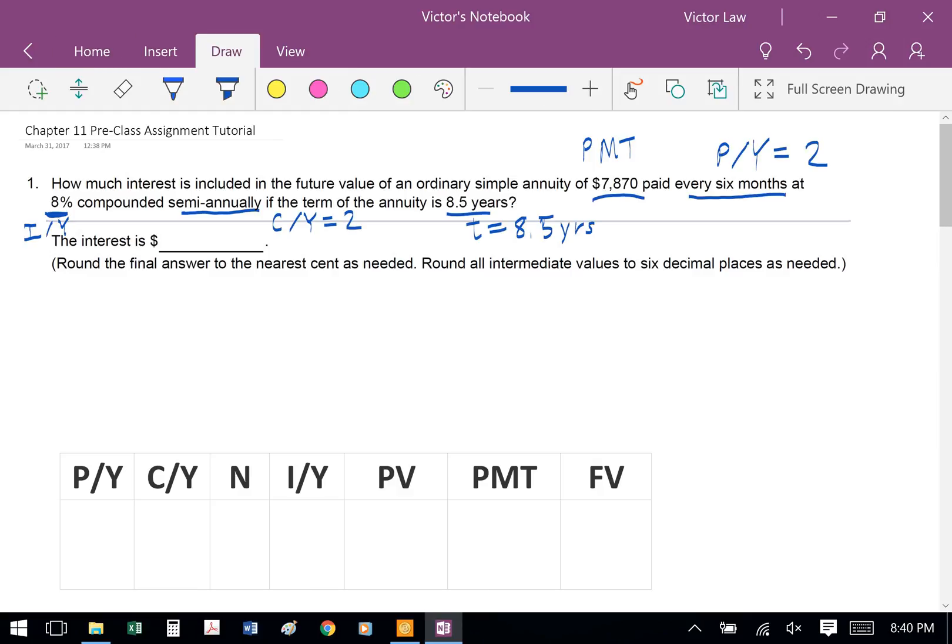In this question we're solving for future value. The first number, $7,870, is our PMT or payments. Every 6 months represents P over Y, our payment per year, which is 2 times a year. Our 8% is the nominal interest rate, I over Y. Compounded semi-annually means C over Y equals 2. The term of the annuity is 8.5 years, so T equals 8.5 years.